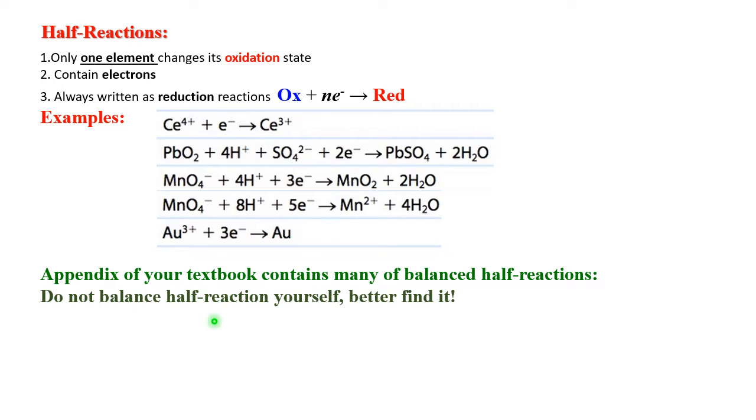Now chapter 4 tells you how to balance half-reactions, but keep in mind appendix L in your textbook contains many balanced half-reactions. Same is true for any other good textbook in chemistry. So advise: do not balance half-reactions yourself, better find it. Only if it's some exotic reaction and it's impossible to find, you're the first person ever that needs this half-reaction, you are doing this balancing yourself. I don't believe you cannot find it.